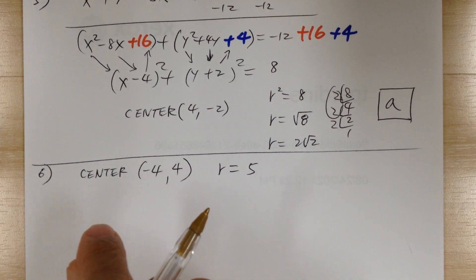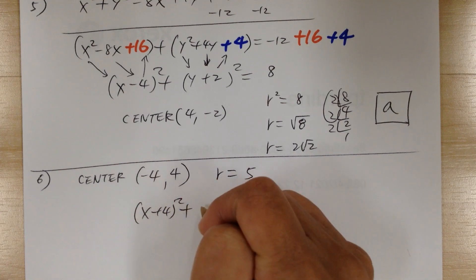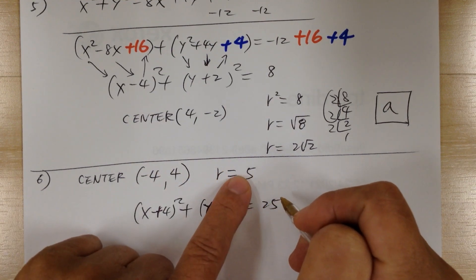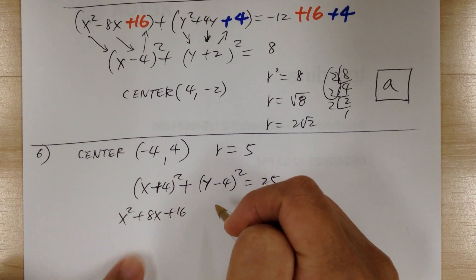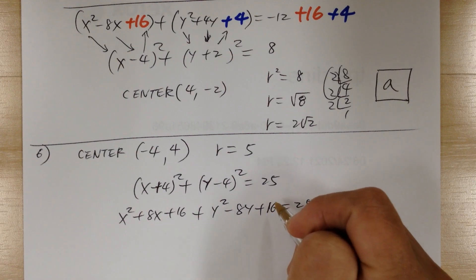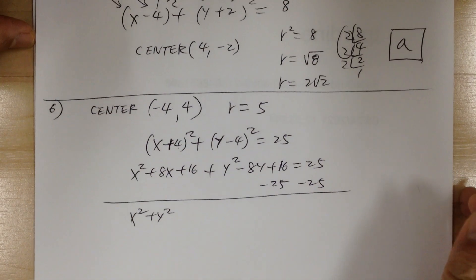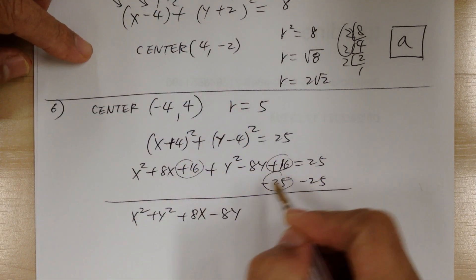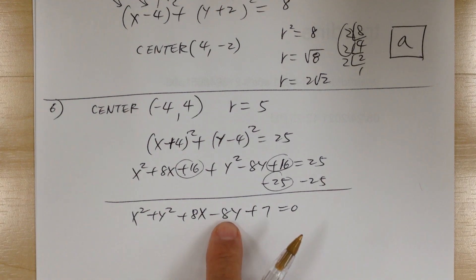From here, write the equation using the center-radius form. You get x plus 4 squared plus y minus 4 squared equal to 25, since r squared is 25. Then multiply everything out: x squared plus 8x plus 16, and y squared minus 8y plus 16, equals 25. Subtract 25 from each side: x squared plus y squared plus 8x minus 8y, and 16 plus 16 is 32 minus 25 gives plus 7. Answer D.